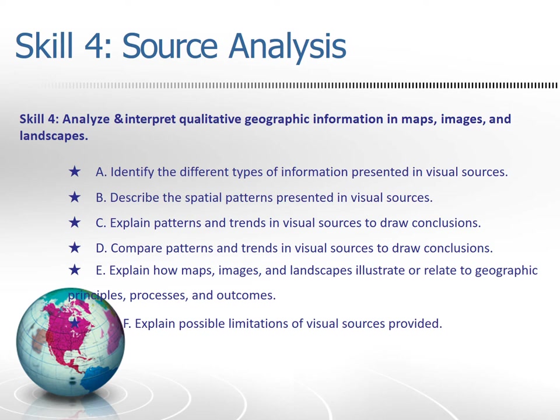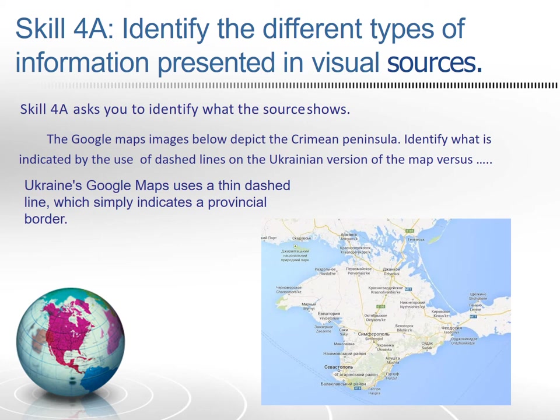Let's start with skill 4A: identifying the different types of information presented in visual sources. It's basically asking you and your students to identify what the source shows. The Google Maps images on the next slide depict the Crimean Peninsula. Identify what is indicated by the use of dashed lines on the Ukrainian version of the map versus the Russian version of the map.